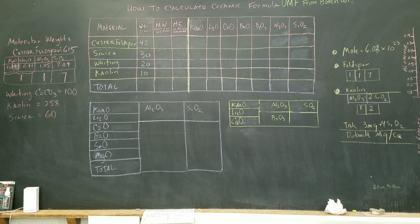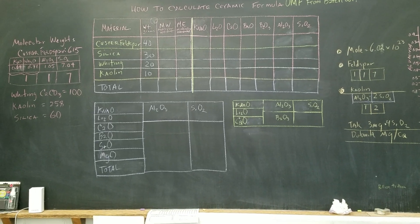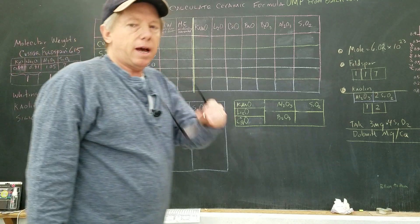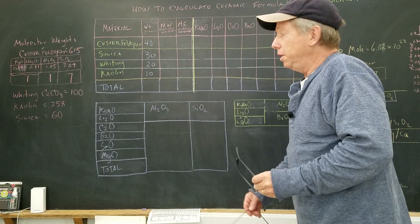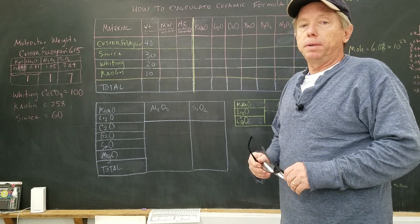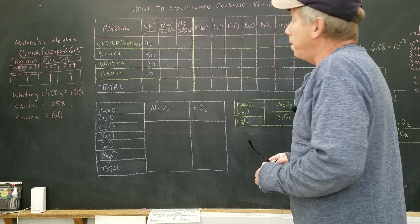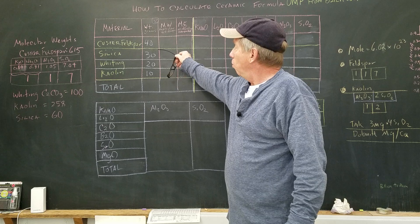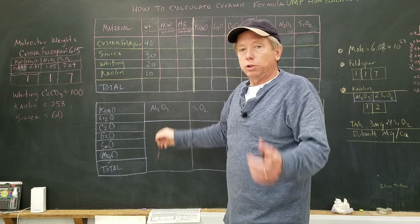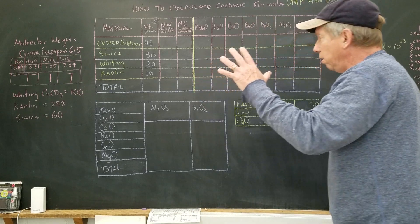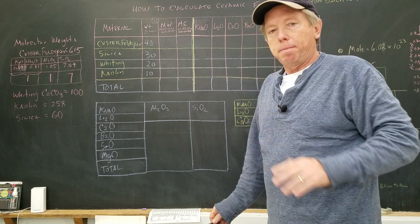Hey, John Britt here. What we're going to do today is calculate the unity molecular weight or formula of a glaze recipe from a batch. The batch is Leach White 4-3-2-1, which we talked about in the previous video.